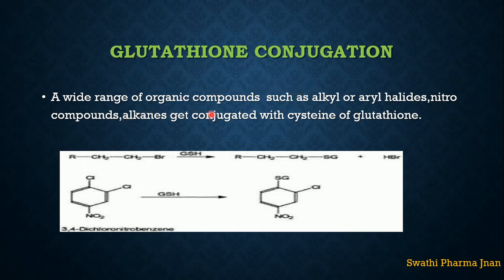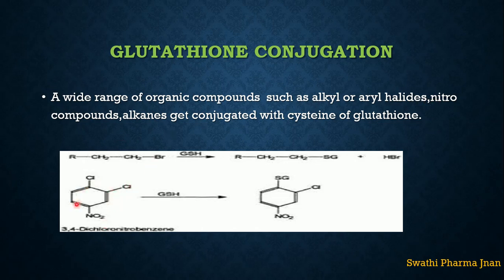Glutathione conjugation involves a wide range of organic compounds such as alkyl halides, aryl halides, nitro compounds, and alkanes, which get conjugated with cysteine. Cysteine is a sulfur-containing amino acid present in glutathione. In a general example, an alkyl halide reacts with glutathione, and cysteine attaches in the place of the halide ion.